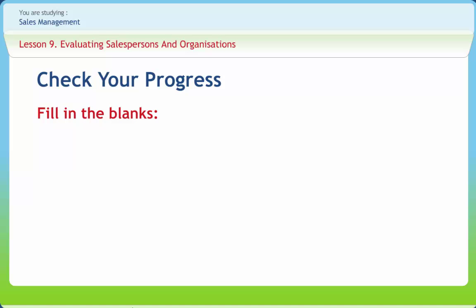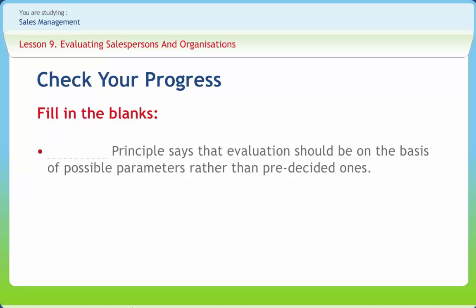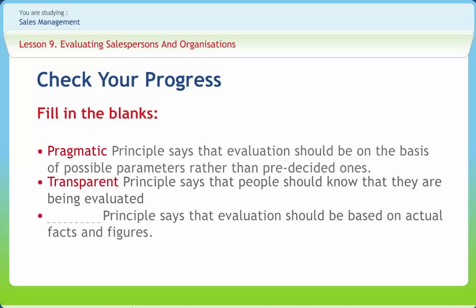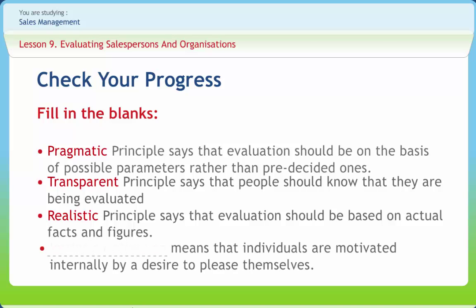Now let us check understanding of the concepts discussed. Fill in the blanks: Which principle says that evaluation should be on the basis of practically possible parameters rather than pre-decided ones? — Pragmatic. Which principle says that people should know that they are being evaluated? — Transparent. Which principle says that evaluation should be based on actual facts and figures? — Realistic. Which principle says that evaluation should not be vague? — Specific.